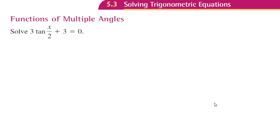We're going to solve this trig function: 3 tangent of x over 2 plus 3 equals 0. So we're taking 3 times tangent of x over 2, and then adding 3 equals 0.